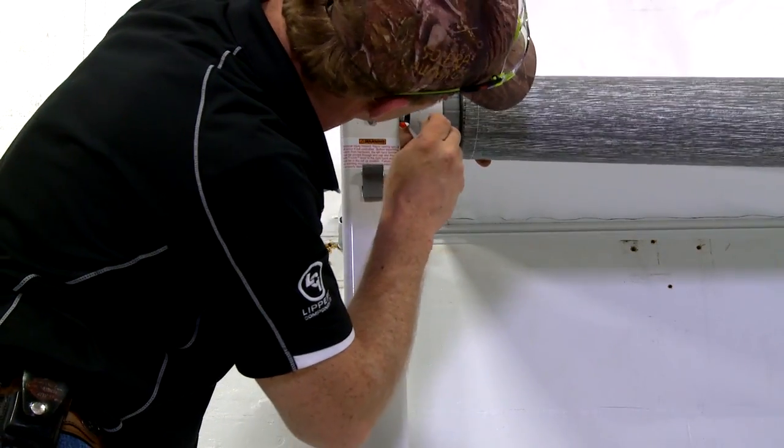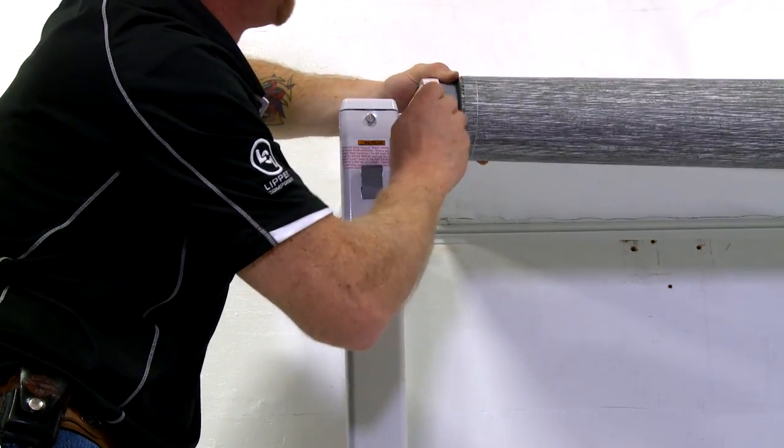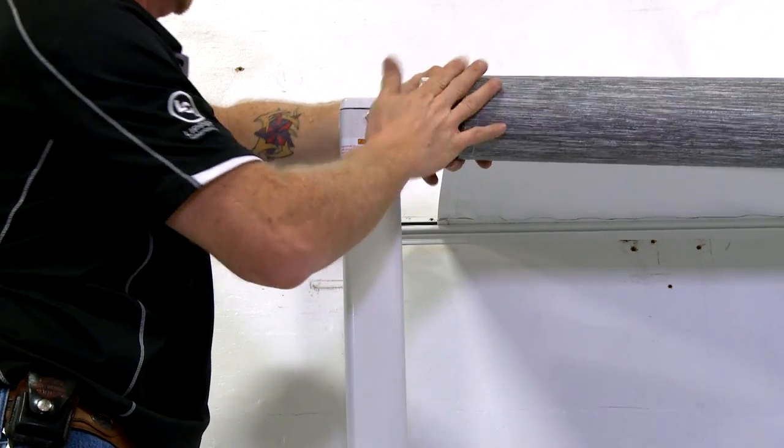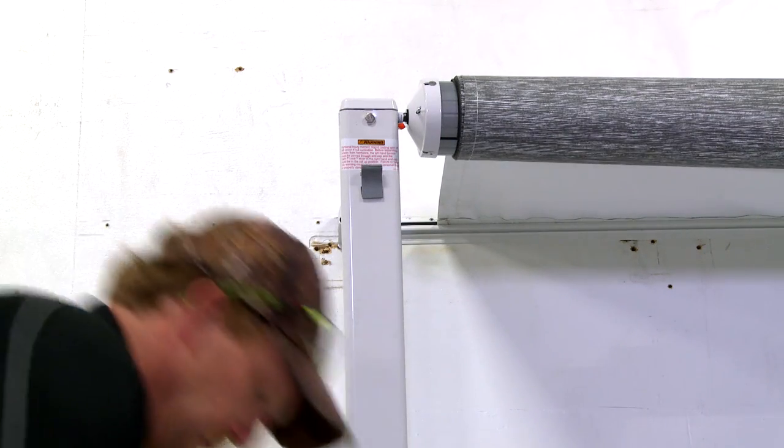Reinstall the cotter pin to the idler side end cap. To properly align the hole from the cotter pin, it may be necessary to slightly move the awning in or out using the extend retract switch.